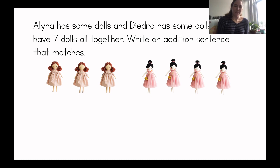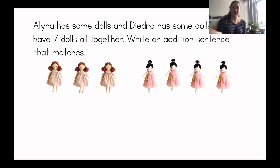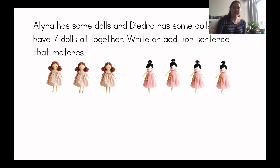So I'm going to get started with this one, and I'm going to remember that I need to write an addition number sentence. So I'm going to read the word problem, I'm going to look at the pictures, and I'm going to write an addition number sentence. Let's read this one. It says, Aaliyah has some dolls, and Deidre has some dolls. They have seven dolls all together. Write an addition sentence that matches.